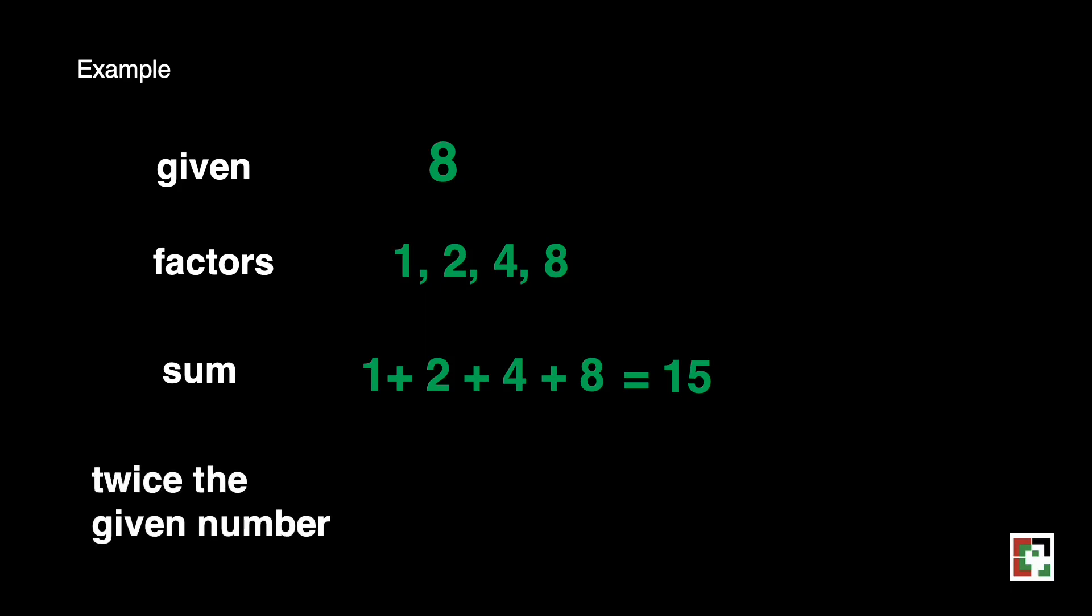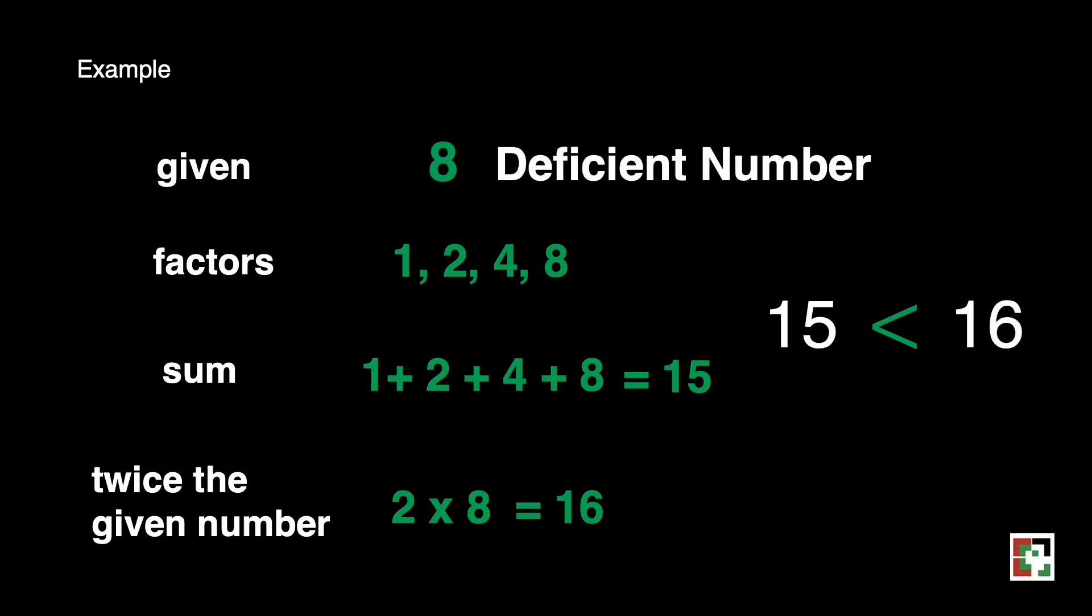Twice the given number, that's 2 times 8 is equal to 16. We can say that the sum of the factors of 8 is less than compared to its twice that given number. So, we can say that 8 is a deficient number.